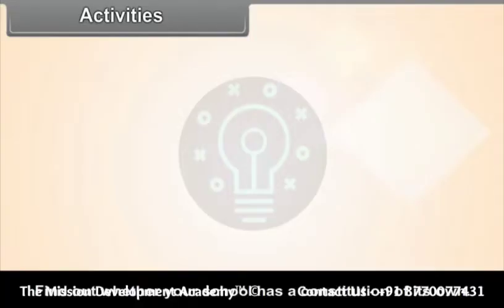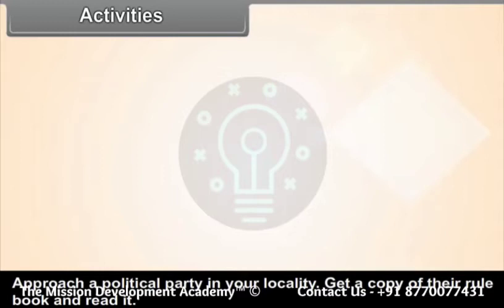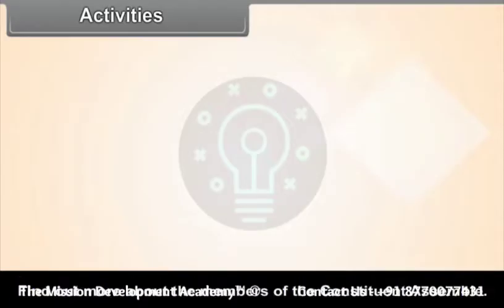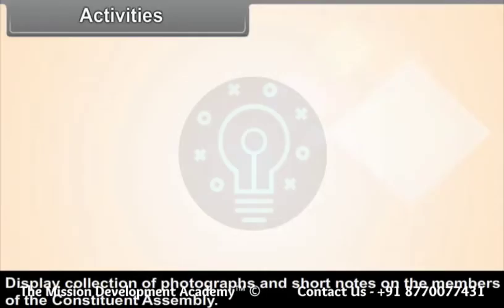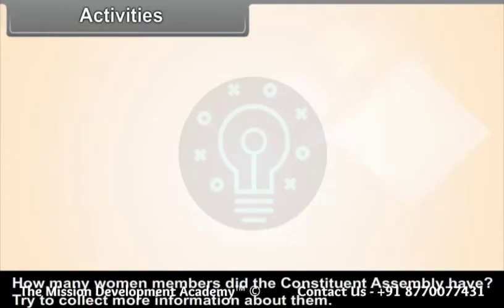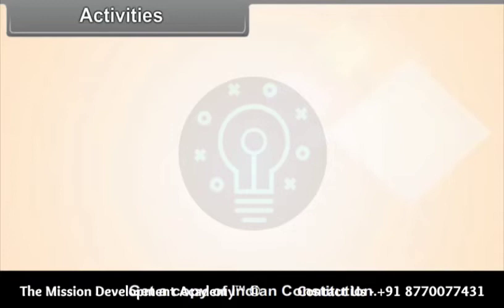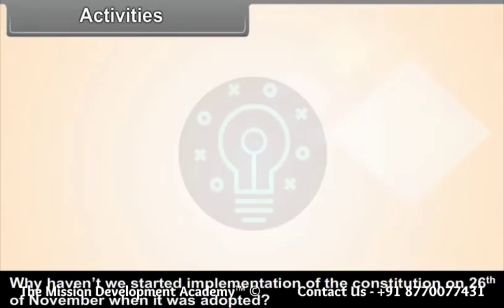Activities: Find out whether your school has a constitution of its own. Approach a political party in your locality, get a copy of their rule book and read it. Find out more about the members of the Constituent Assembly and the different committees. Display a collection of photographs and short notes on the members. Find out how many women members the Constituent Assembly had. Get a copy of the Indian Constitution and prepare a constitution for your class. Why wasn't the constitution implemented on 26th November when it was adopted?